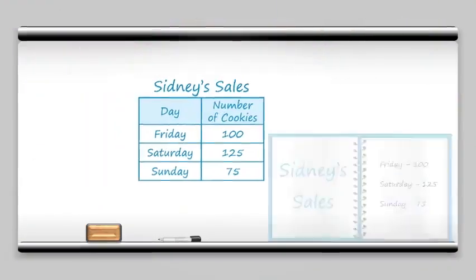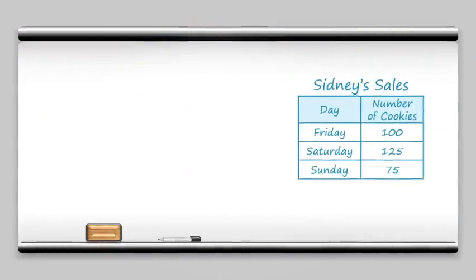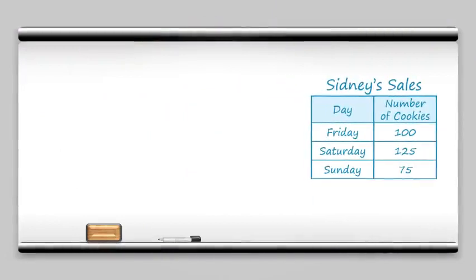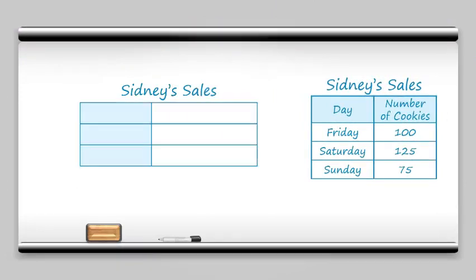Now we can take this mathy-looking table and turn it into a picture graph. The picture graph is going to have a title just like our table. It's going to look a little bit like our table — we're going to have the categories down the side, and then we're going to fill up the frequency, the number of cookies, with pictures instead of a number. So what kind of picture should we use? How about a cookie? That would make sense, right?